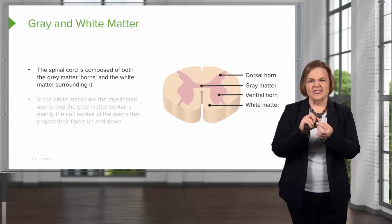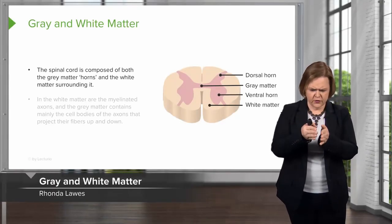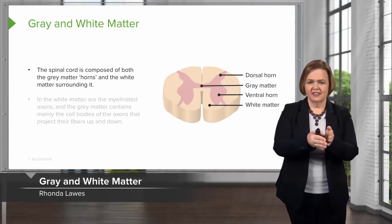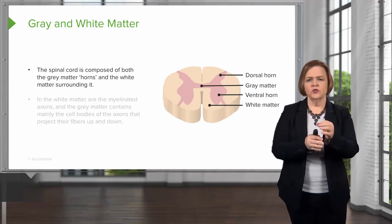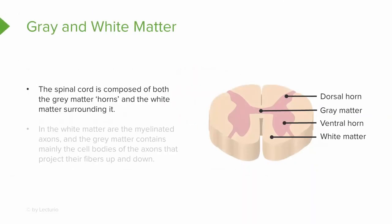Look at this — we took a slice of the spinal cord, like slicing a carrot, and you get a little round circle. That's exactly what you see here, because the spinal cord is composed of both gray matter and white matter surrounding it. So take a look at that graphic — look at where the gray matter is, and then look at the white matter surrounding it.